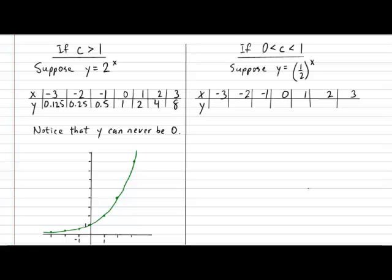All right, let's see what kind of y values we'll get. So if you use your calculator, you'll find that a half exponent negative 3 gives you 8. A half exponent negative 2 gives you 4. A half exponent negative 1 gives you 2. A half exponent 0 gives you 1. Again, remember, anything exponent 0 will always equal 1. A half exponent 1 is just a half. A half exponent 2 is 0.25. And finally, a half exponent 3 gives you 0.125.